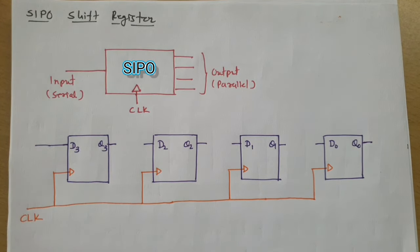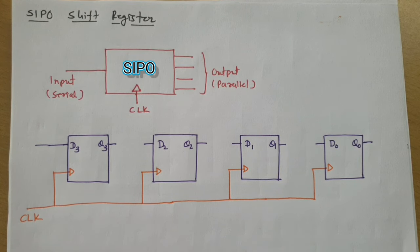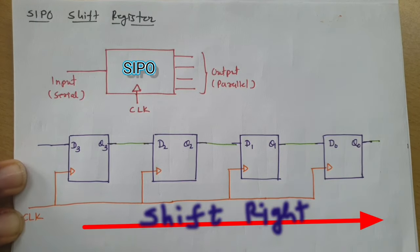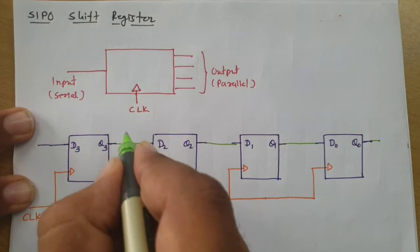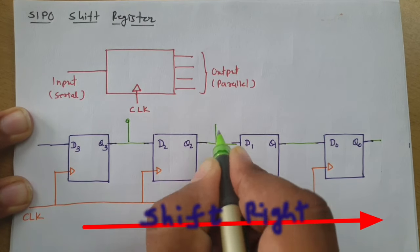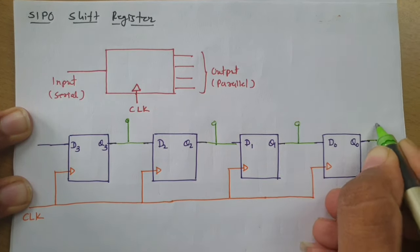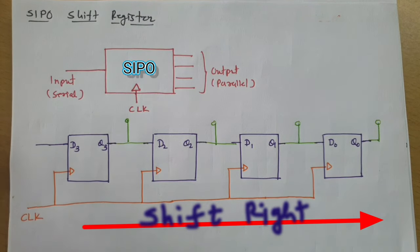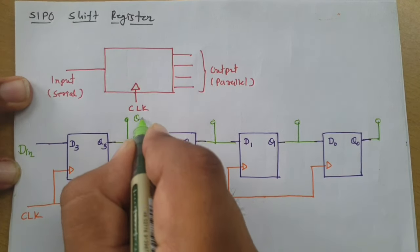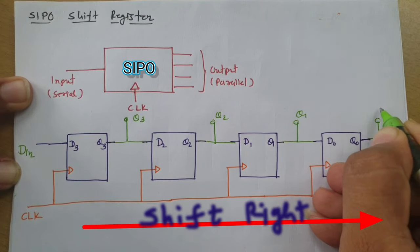This Serial Input Parallel Output shift register circuit is almost identical to the Serial Input Serial Output circuit seen in the previous video, where the connection provides shift-right data. The only difference here is that we take parallel output. The output terminals are labeled Q3, Q2, Q1, and Q0, with input terminal Din.